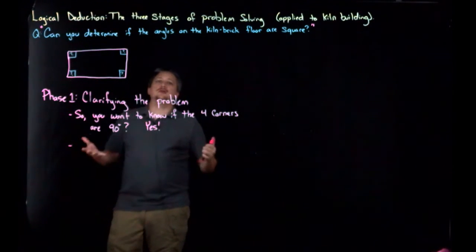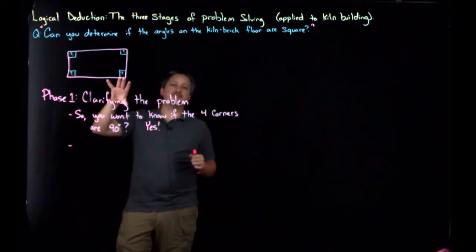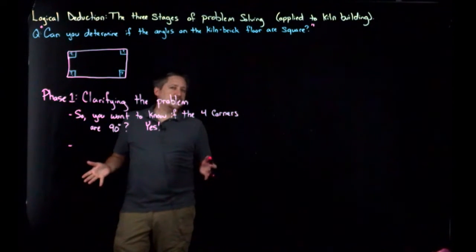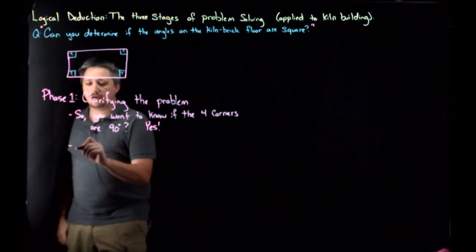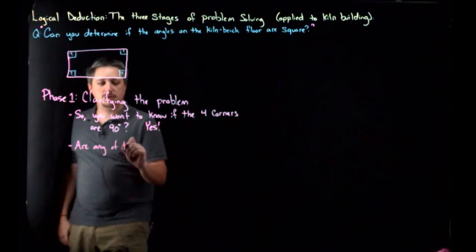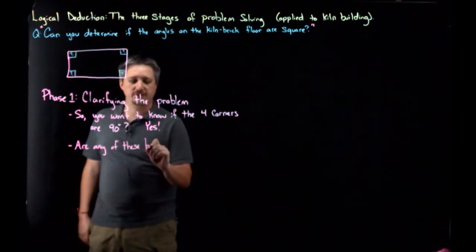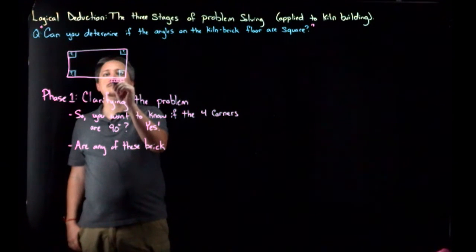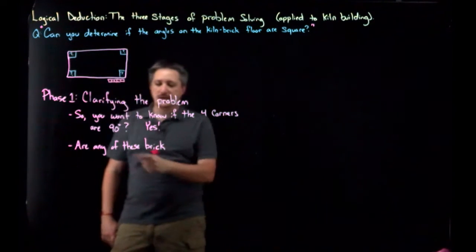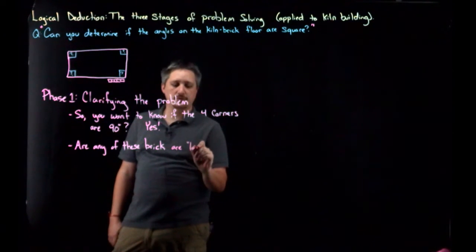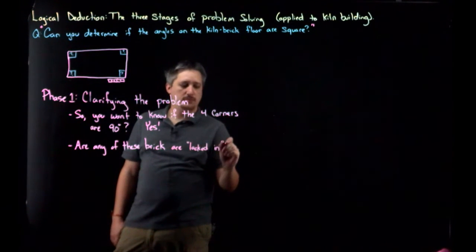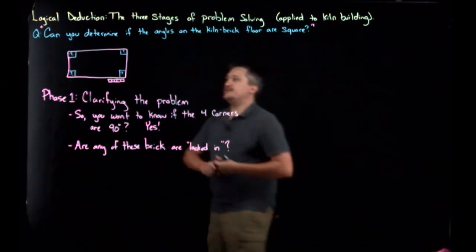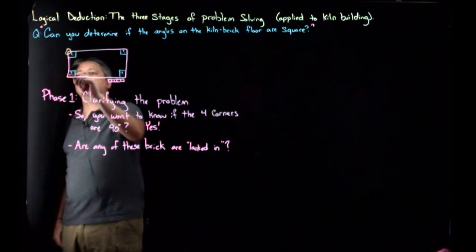Another question I asked was: are any of these brick locked in place? Because what this actually looks like is a bunch of brick lined up along the edge to make that length. So, I asked if any of these bricks are locked in place, because if she's going to want me to fix this, I need to know if I can move any of these bricks. And she immediately says, yes, they are. In fact, the two left bricks need to stay where they are.